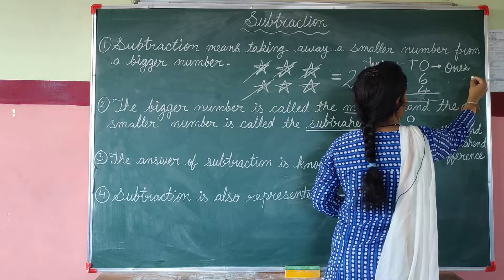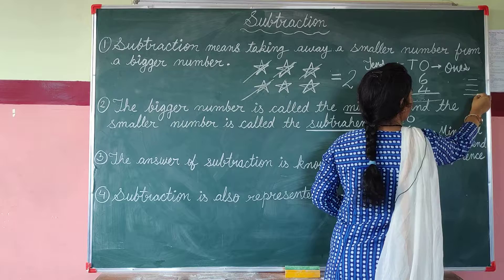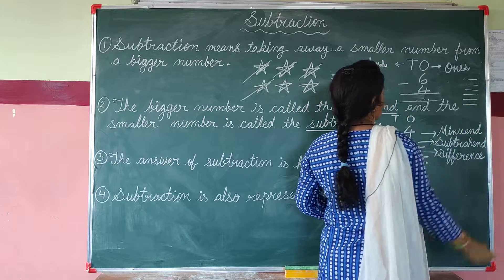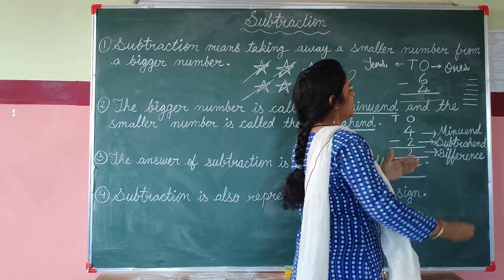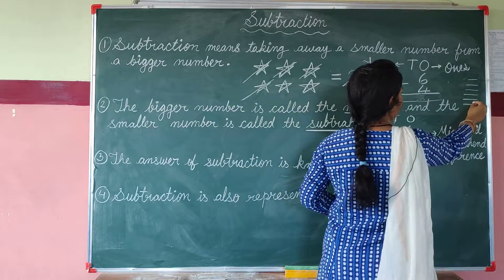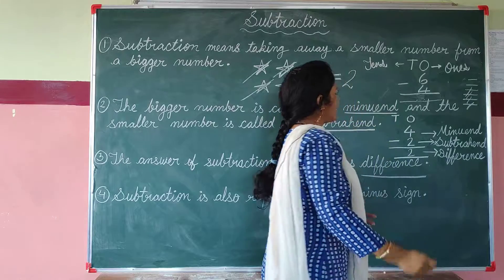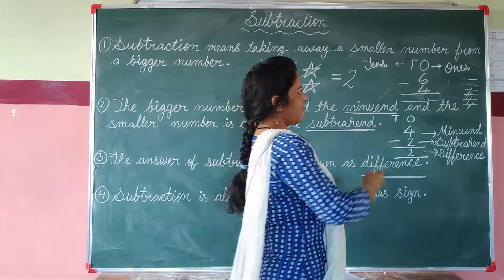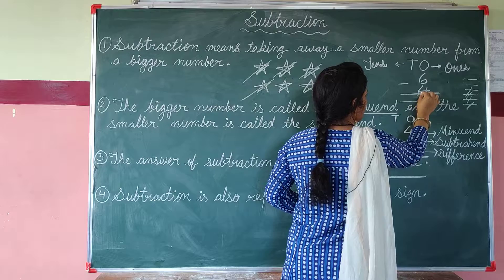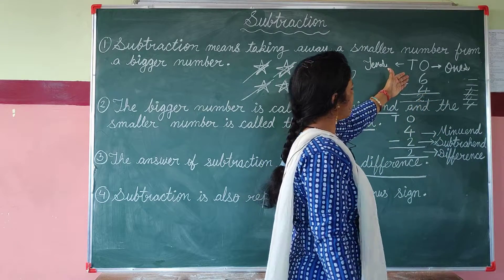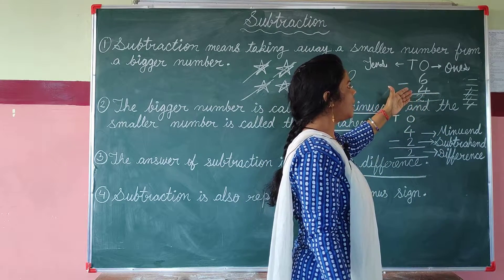We draw 6 lines: 1, 2, 3, 4, 5, 6. Now we had given 4 stars to our friend, so we remove 4 lines: 1, 2, 3, 4. How many lines are left? 1, 2. So 2 is our answer. When we subtract 4 from 6, the answer is 2.